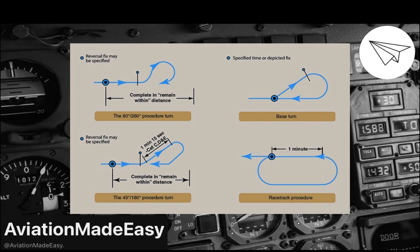There's the famous 80 to 60 procedure turn, it does require a bit of math, and when you're flying everything shrinks a little more, especially the brain, so try to choose one that's more simple to do. There's the base turn, there's the racetrack procedure.